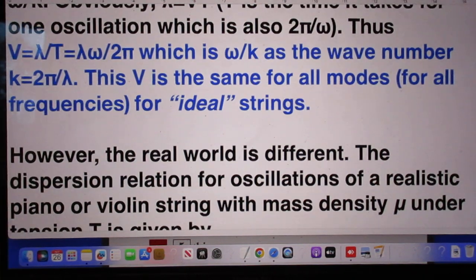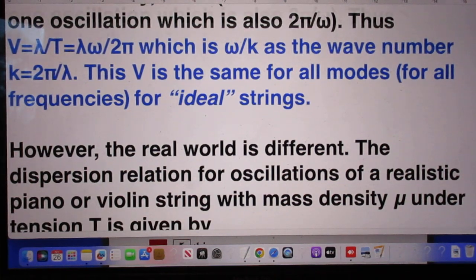Therefore V is lambda divided by 2π, which is omega divided by k, because k is the wave number, 2π divided by lambda. This V is the same for all modes, for all frequencies, for ideal strings.